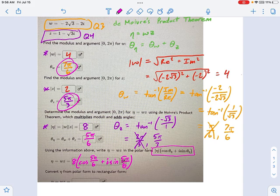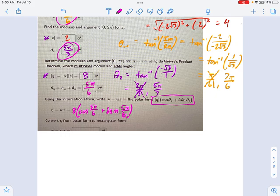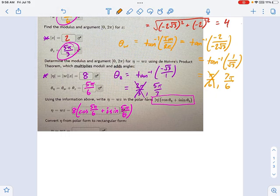You'll need to get used to that, but for the time being, I'm going to keep writing these down to remind you. And now the last thing to do is just convert that into rectangular form. So one last step here. I want to convert this to rectangular form. So all I do is I say, no problem, here's eta equals 8 times, what's the cosine of 5 pi over 6?